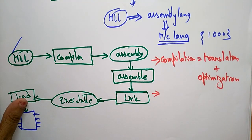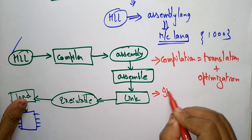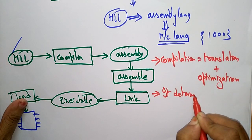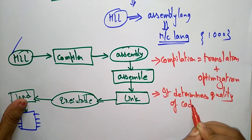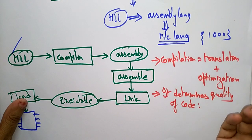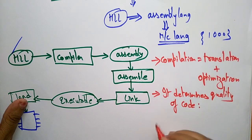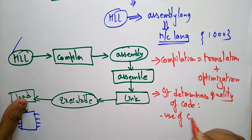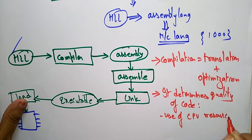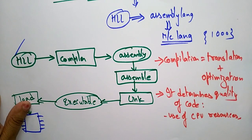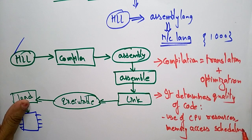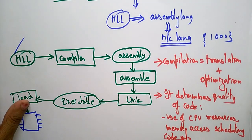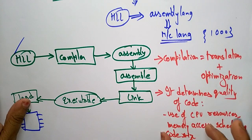The compiler determines the quality of code in the form of use of CPU resources, memory access scheduling, and code size. The quality of code can be determined and measured based on these parameters: use of CPU resources, memory access scheduling, and code size.